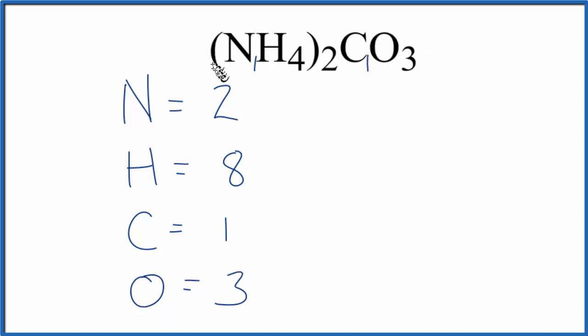To do that, you multiply the number of oxygen atoms times Avogadro's number. So three times Avogadro's number, this gives us the number of oxygen atoms in one mole of (NH₄)₂CO₃.